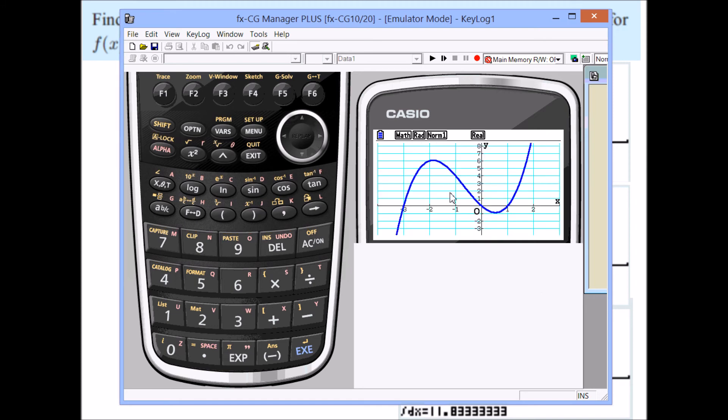I get my cubic polynomial. I want the area between here and here. So if I go g-solve. F6. And F3 again. Now I've got some more choices down here on the newer calculator.